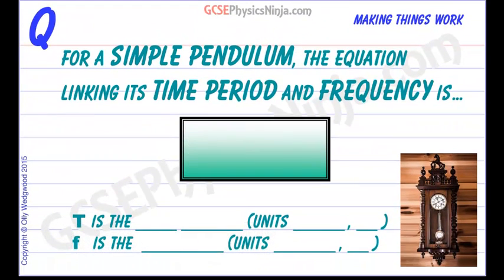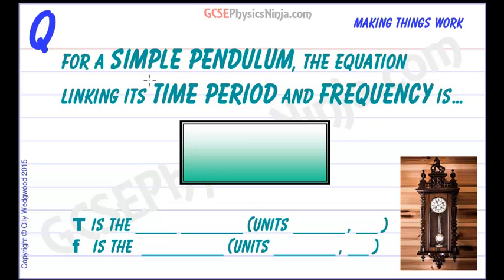So let's have a look at this flashcard. For a simple pendulum, the equation linking its time period, so we now know what that is, the time taken to go all the way one way and then back again the other way, and frequency—and frequency here is the number of oscillations per second—is T, the time period, equals 1 divided by the frequency.